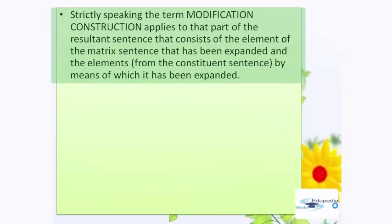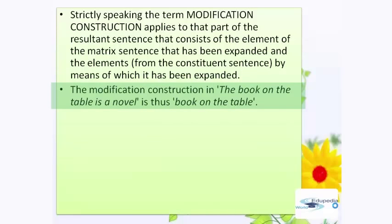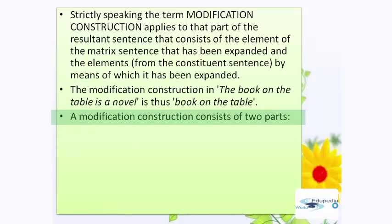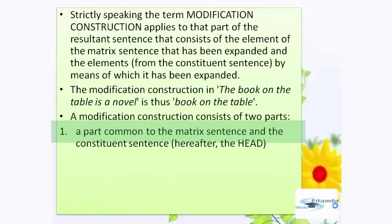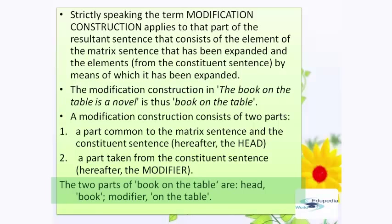Strictly speaking, the term modification construction applies to that part of the resultant sentence that consists of the element of the matrix sentence that has been expanded and the elements from the constituent sentence by means of which it has been expanded. The modification construction in 'the book on the table is a novel' is thus 'book on the table.' A modification construction consists of two parts: first, a part common to the matrix sentence and the constituent sentence, called the head; second, a part taken from the constituent sentence, which is called the modifier. The two parts of 'book on the table' are: head — 'book'; modifier — 'on the table.'